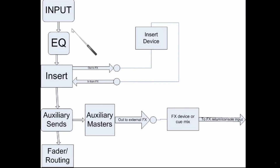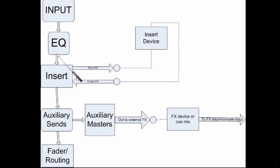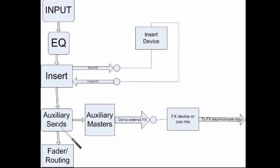Those monitor channels are there so that you can hear what's being recorded without affecting what's going to tape or the converter, depending on how you record. Looking at the channel strip, you've got the EQ and the input section up top, and then the insert. Some consoles have the insert pre-EQ and some are post-EQ. The insert is going to send the entire signal coming down the channel out to the insert device of your choice — usually a compressor or an EQ — and then it comes back in to the insert and continues on its way down the channel.